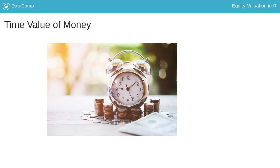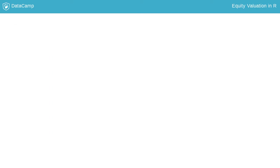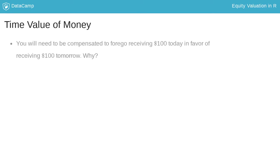What is time value of money? Suppose you have a choice to receive $100 today or $100 a year from now. Which one would you choose? Virtually everyone will choose to receive the money today. From a finance perspective, the reason for this choice is that receiving $100 today is certain, while receiving $100 a year from now entails risk.